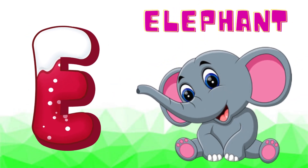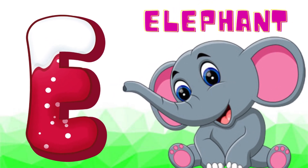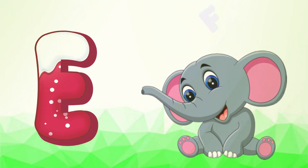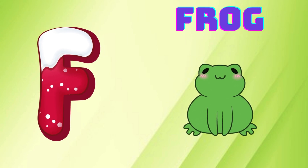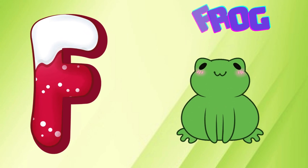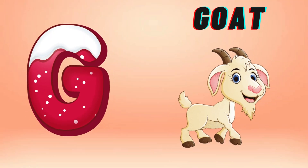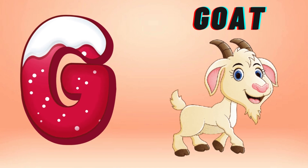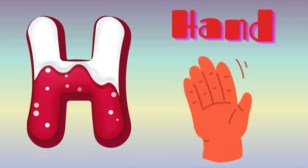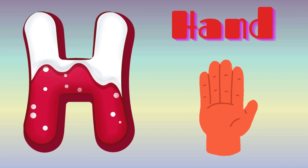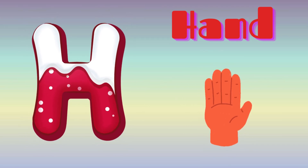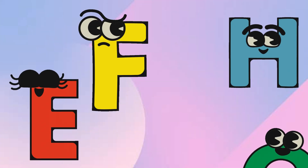E is for Elephant, E-E-Elephant. F is for Frog, F-F-Frog. G is for Goat, G-G-Goat. H is for Hand, H-H-H-Hand.